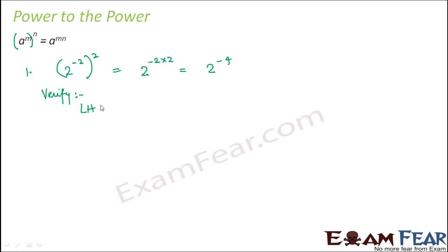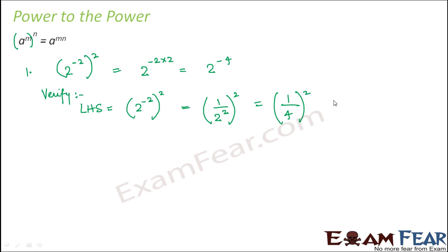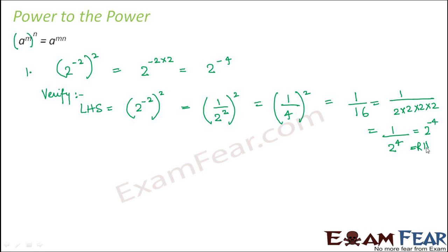Let's verify: 2 to the power minus 2 whole squared means 1 by 2 squared, whole squared, which is 1 by 4 squared, giving 1 by 16. Since 16 is 2 to the power 4, this is 1 by 2 to the power 4, which equals 2 to the power minus 4 — matching the right hand side. This proves the law holds true.